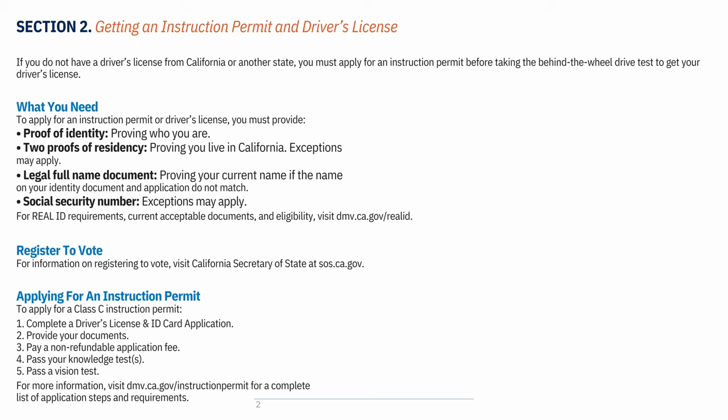You must provide: proof of identity (proving who you are), two proofs of residency (proving you live in California — exceptions may apply), a legal full name document if the name on your identity document and application do not match, and a social security number (exceptions may apply).